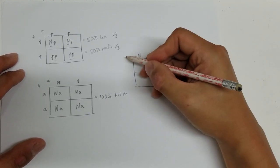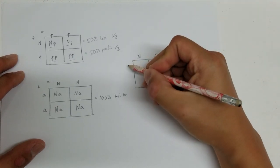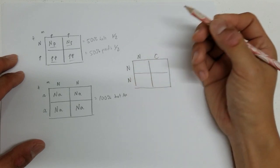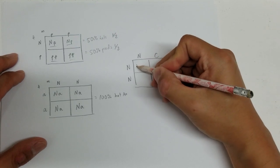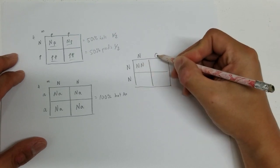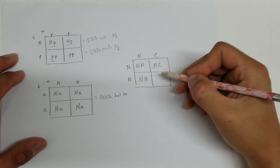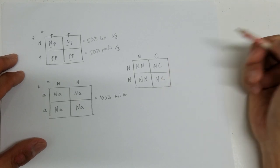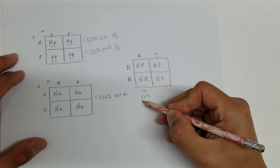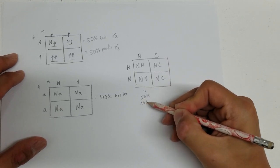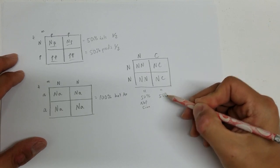And again, male on top, female on the left. And she is not a cinnamon at all. So she has two Ns for not being cinnamon at all. And then again, carrying the letters from the top and the left into the cells, we got N-N, N-C, N-N, N-C. So here, we have 50% chance of not being cinnamon. And then over here, we have 50% chance of being a cinnamon.